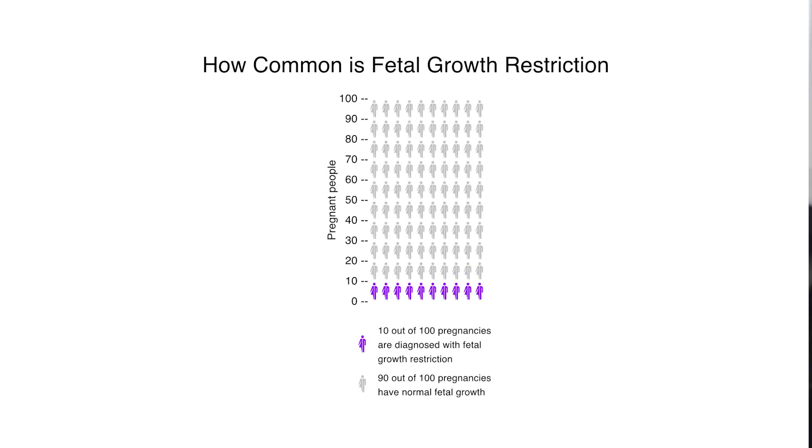Let's talk about what it means to have a baby with fetal growth restriction and when it is diagnosed. Fetal growth restriction is diagnosed in one in every 10 pregnancies, so about 10% of all pregnancies. Fetal growth restriction can be diagnosed anytime in the second or third trimester of pregnancy.